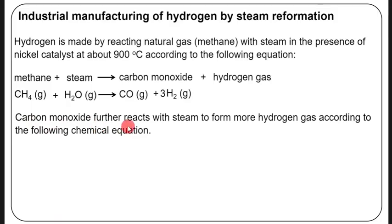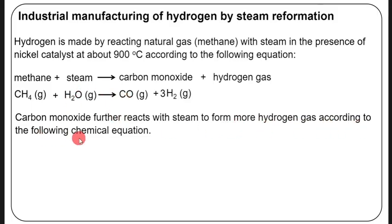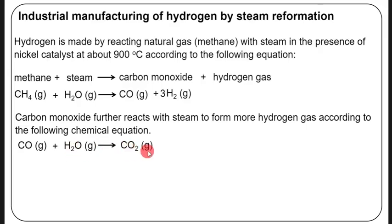From this stage, the next stage is that carbon monoxide further reacts with steam to form more hydrogen gas according to the following equation: CO + H₂O → CO₂ + H₂. This is the final equation involved in the manufacture of hydrogen by steam reformation.